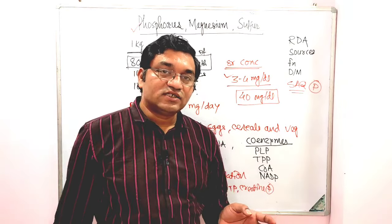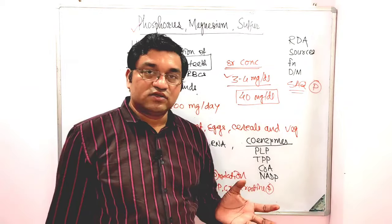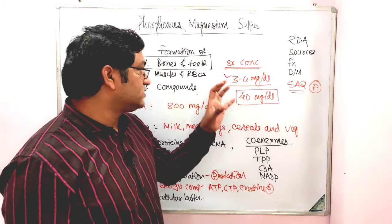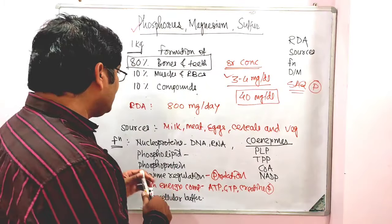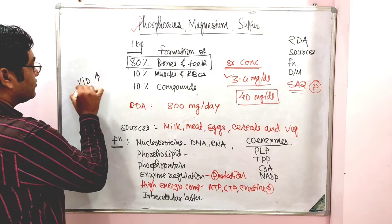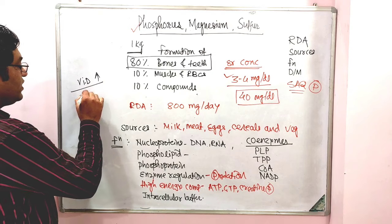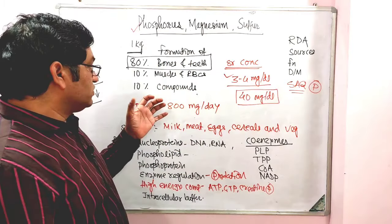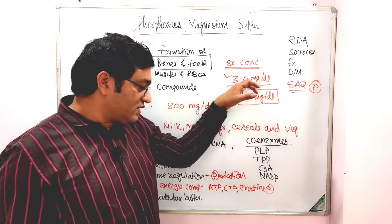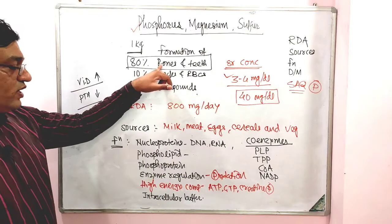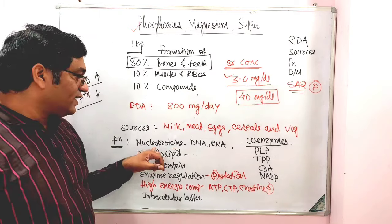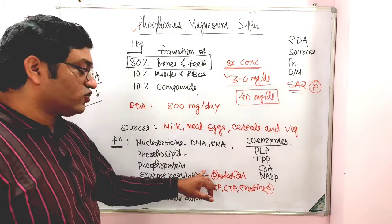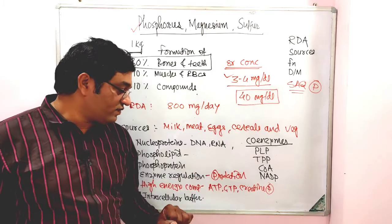Three hormones also regulate the phosphorus level along with calcium: parathyroid hormone, Vitamin D (calcitriol), and calcitonin. Vitamin D increases the absorption of phosphorus, while parathyroid hormone decreases absorption. The serum phosphorus level is 3 to 4 milligram per deciliter. Important functions of phosphorus include: bone and teeth formation; constituent of DNA and RNA; phospholipid and phosphoprotein formation; enzyme regulation by phosphorylation and dephosphorylation (covalent modification).